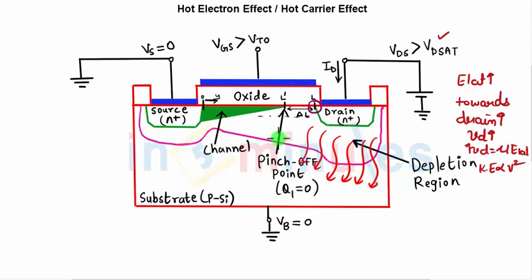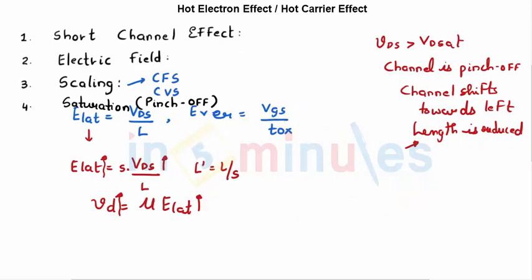The electrons will move toward the oxide layer. There is another electric field present, which is E vertical, given by VGS by TOX. If we presume that VGS is not scaled down and TOX is, then E vertical is also increasing, because T dash OX equals S times TOX.